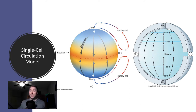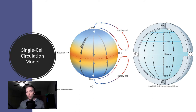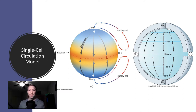Here we can see what this single-cell model looked like as developed by Hadley — the Hadley cell. In the left graphic, we see a temperature-based expression: hot along the equator with low pressure systems, colder along the poles with high pressure systems. That rising air at the equator descends once it reaches the poles, and we have surface flow primarily equatorward. A similar view is shown in three dimensions in the image to the right.